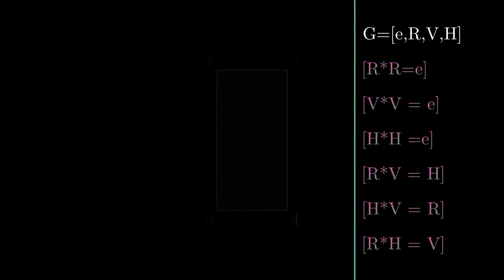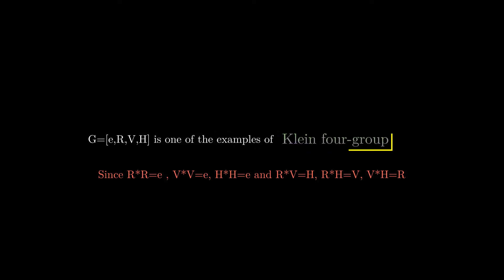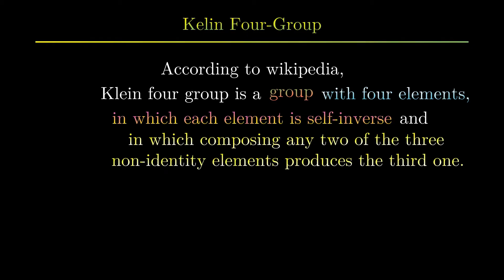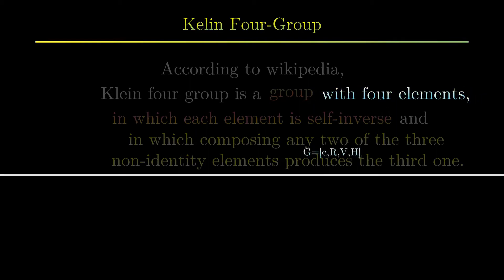Enough with pictures — let's find out why G is so special and how it relates to groups. Because of the properties we found, G is nothing but one example of the famous Klein Four Group. According to Wikipedia, the Klein Four Group is a group with four elements. I'm going to explain it clearly: the first important condition is that we want exactly four elements, which our example satisfies with G = {E, R, V, H}.